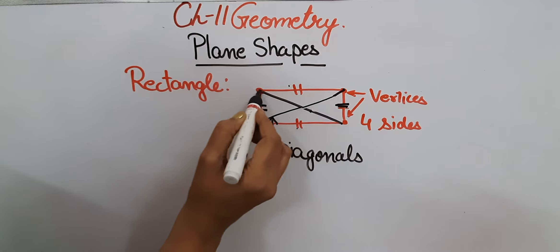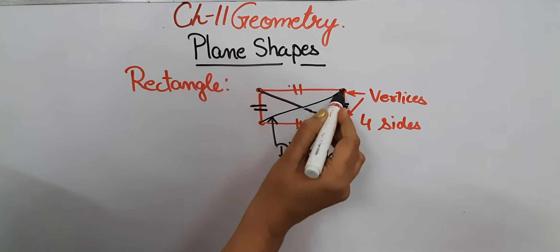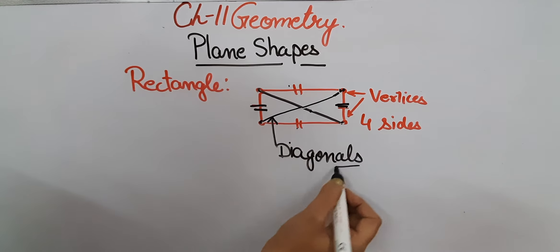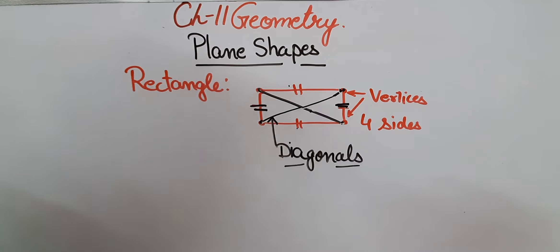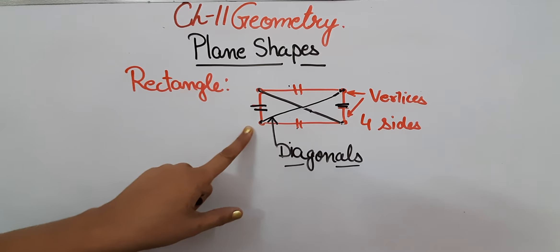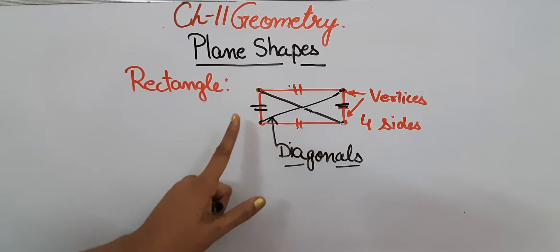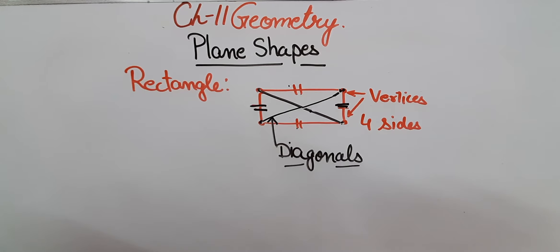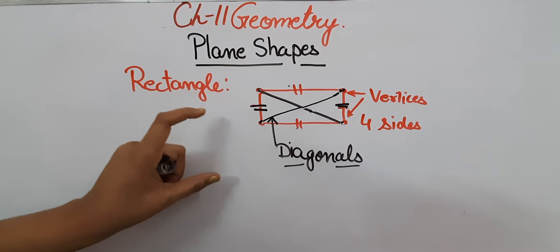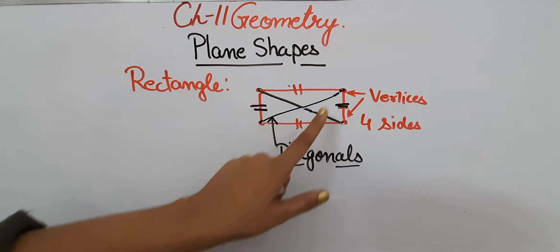Both of these line segments are known as the diagonals of the rectangle. The diagonal is the line joining the opposite vertices of a plane shape. The rectangle has two diagonals, and if we measure them we will observe that the diagonals of the rectangle are equal in length.